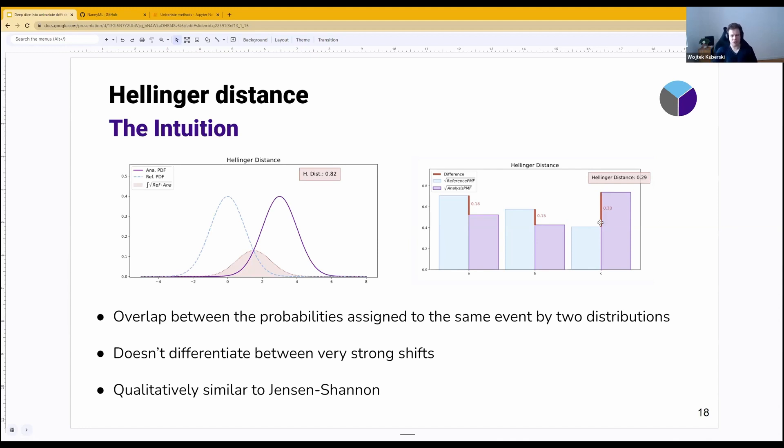It has one potential problem, which is it does not differentiate between very strong shifts. Imagine that your distributions are already really far apart from each other and there is no common support, so there is no overlap. If there is no overlap, the Hellinger distance is going to be one. If you move them even further apart, the Hellinger distance is still going to be one. That is a potential drawback, but of course, in practice, that rarely happens.